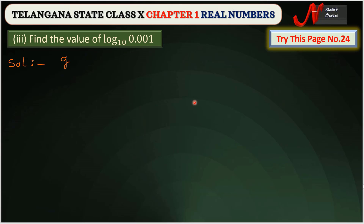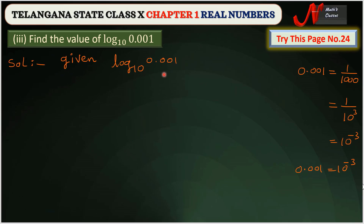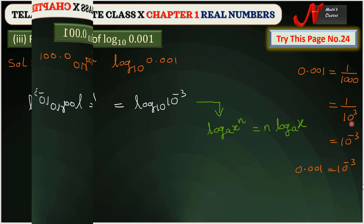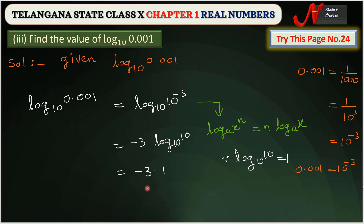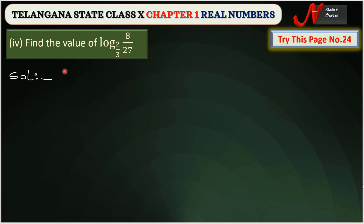Next, find the value of log 0.001 base 10. We convert 0.001 — its value can be written as 10 to the power of minus 3. So log 0.001 base 10 equals log 10^(−3) base 10. Using the power rule of logarithm, we get minus 3 times log 10 base 10, which equals minus 3 times 1, so log 0.001 base 10 equals minus 3.